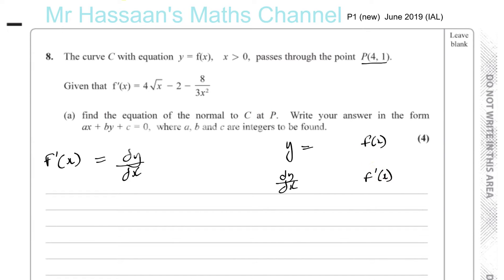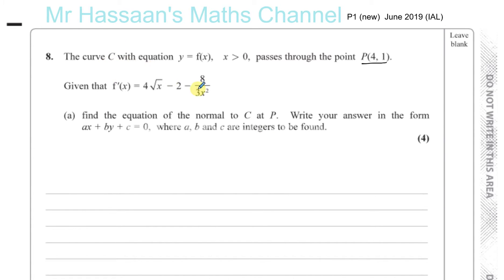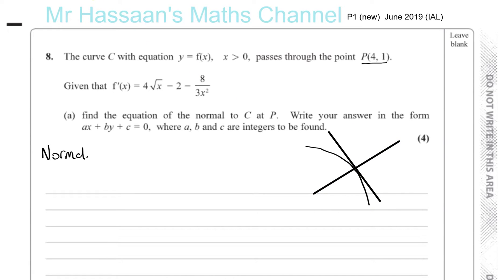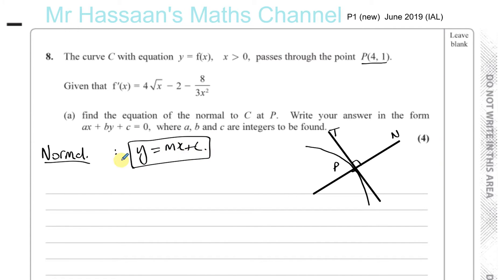We have to find the equation of the normal to curve C at point P. The normal is a straight line. If you have a curve, you have the tangent to the curve, which is a straight line, and the normal to the curve, which is perpendicular to the tangent. So the tangent goes one way and the normal is perpendicular to it.